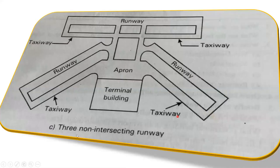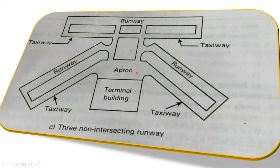The next layout is three non-intersecting runways. We have one runway here, then another runway here, then a third runway here — they are not intersecting with each other. In between there is a terminal building, and for that we have taxiways so that the aircraft can come and from here takeoff or landing will happen. We also have the apron and multiple taxiways surrounding it. This is the three non-intersecting runway configuration.